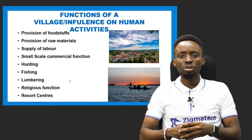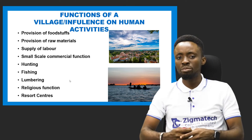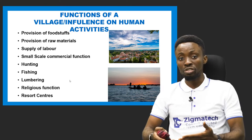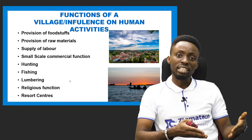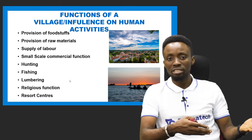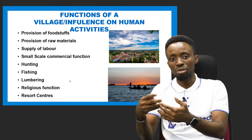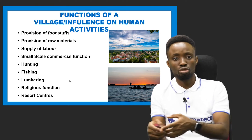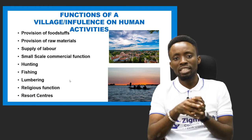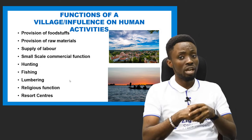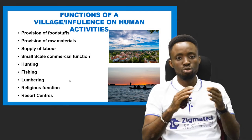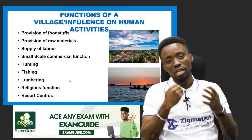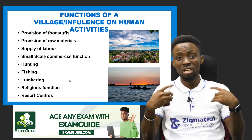The village also provides raw materials, which are made available through primary activities. For example, cassava — a raw material used for producing gari and other commodities — can be gotten from the village and exported to the town for processing into finished products. The village supplies raw materials to the town and also supplies labor to companies and organizations in the town. The village also carries out small-scale commercial functions, as well as hunting, fishing, and lumbering.